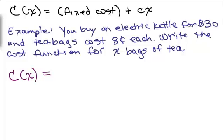What's your fixed cost? That was your $30. And what about producing x bags of tea? The cost per each cup was 8 cents and we're producing x cups of tea, so that would be 0.08x. There's our cost function.